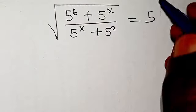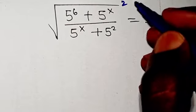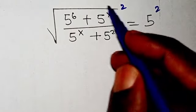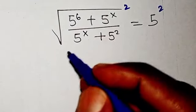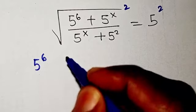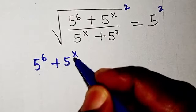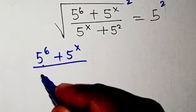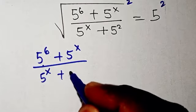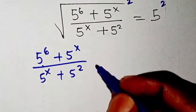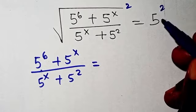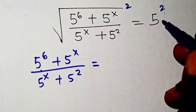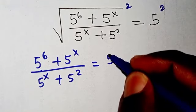I'm going to square both sides. If I square both sides, the square cancels the square root, so I'm going to be left with 5 to the power of x plus 5 to the power of 6, plus 5 to the power of x plus 5 to the power of 2. Now let's keep this 5 to power 2 as is.